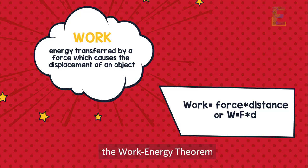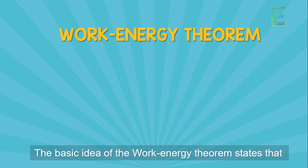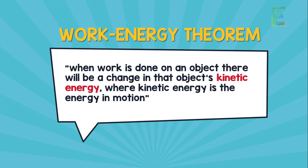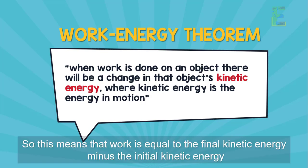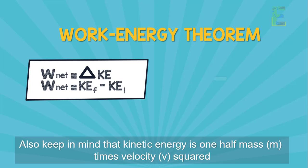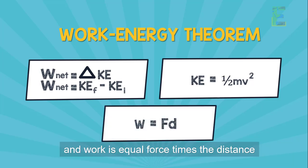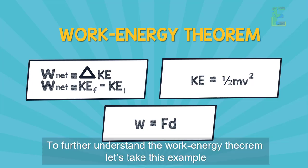The work-energy theorem states that when work is done on an object, there will be a change in that object's kinetic energy, where kinetic energy is the energy of motion. This means that work is equal to the final kinetic energy minus the initial kinetic energy. Keep in mind that kinetic energy equals one-half mass times velocity squared, and work equals force times distance.